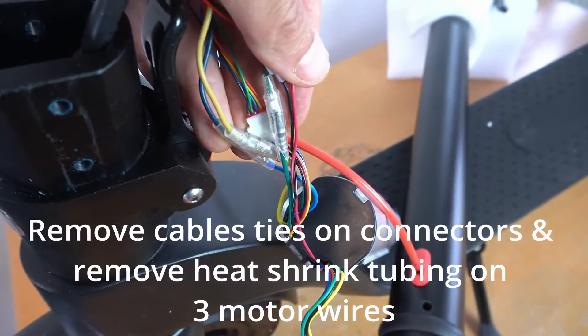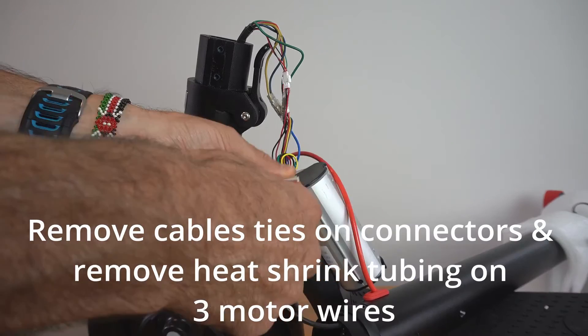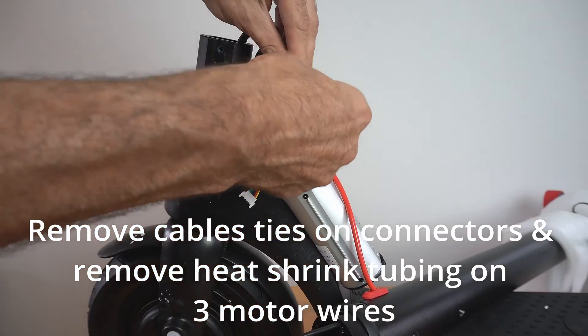Some of the connectors will be held together by a cable tie, so just cut these away and also carefully cut through the heat shrink tubing on the motor wires.